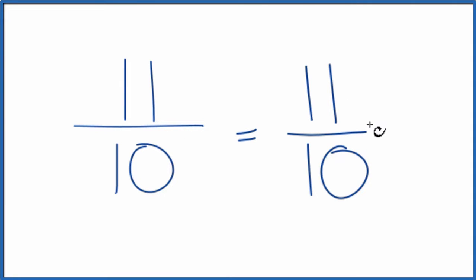Do note that 11 tenths is an improper fraction. It's because the numerator is larger than the denominator. So we could change that to a mixed number. Let's do that.